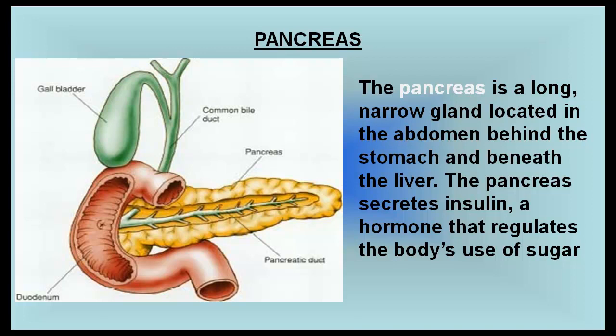The pancreas is a long, narrow gland located in the abdomen, behind the stomach and beneath the liver. The pancreas secretes insulin, a hormone that regulates the body's use of sugar.